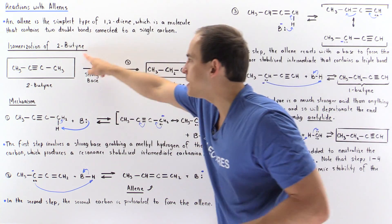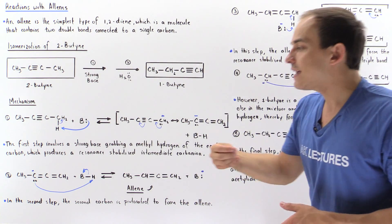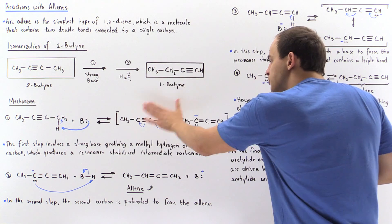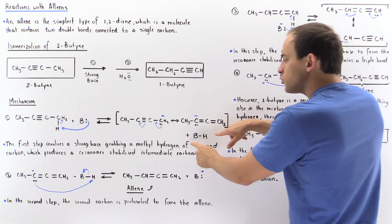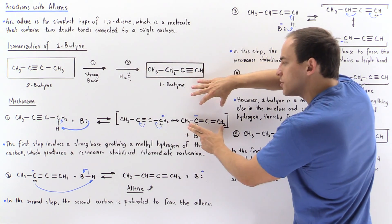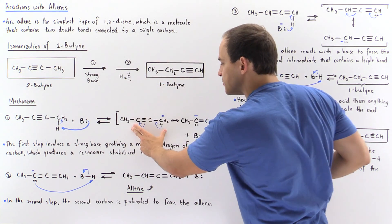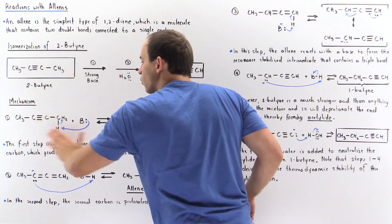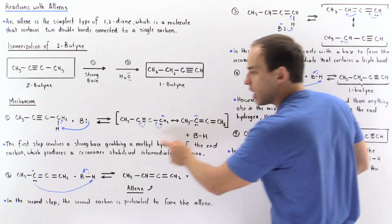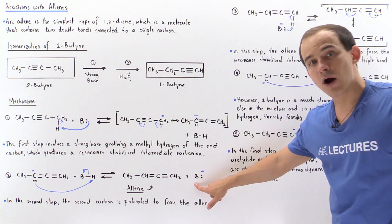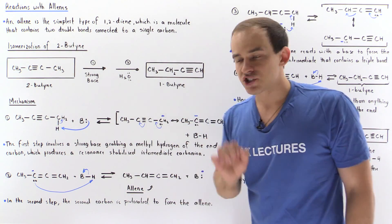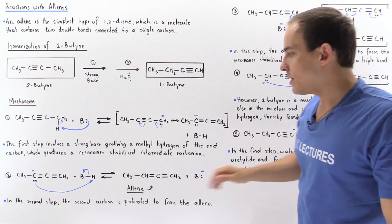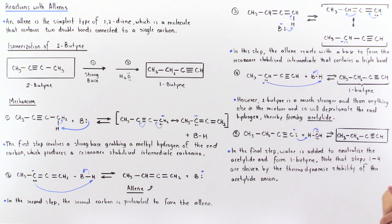This is step one of the addition of a strong base. In the second step, the weak acid can react with either resonance structure. If it reacts with the first structure, the lone pair reforms our reactant. But if this lone pair grabs the H from the other resonance structure, it reforms our strong base and forms our allene — two double bonds bonded to a single carbon, as defined earlier. So in the second step, the second carbon is protonated to form our allene.